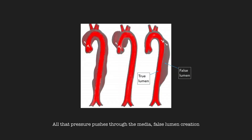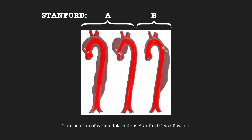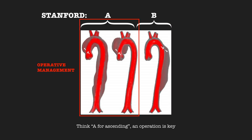All that pressure pushes through the media — false lumen creation — the location of which determines Stanford classification. Descending only, and you got a Stanford type B. Think A for ascending, and operation is key.